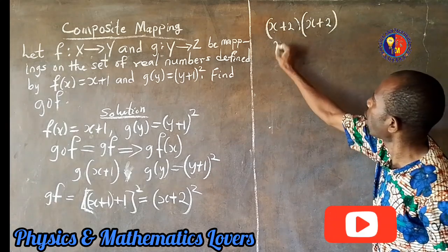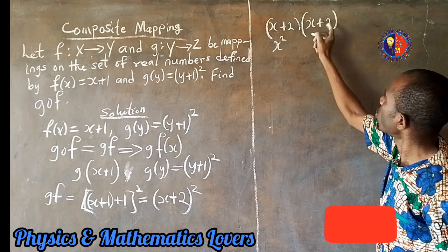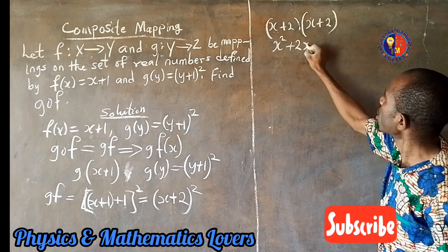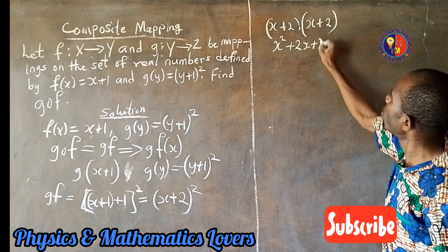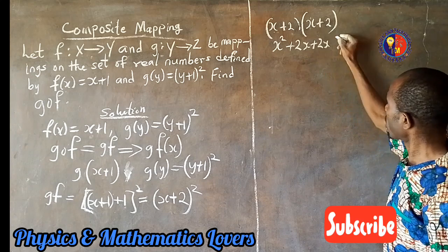This x multiplied, this gives you x squared. x times 2 gives us 2x, 2 times x gives us 2x, 2 times 2 gives us 4.